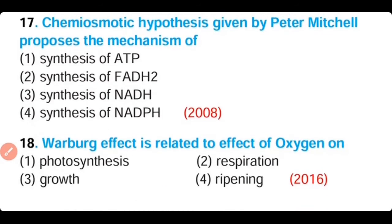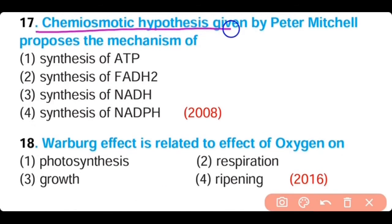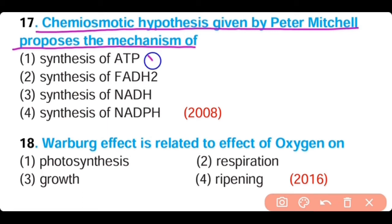Question number 17. The chemiosmotic hypothesis given by Peter Mitchell proposes the mechanism of: synthesis of ATP, synthesis of FADH2, or synthesis of NADH. The correct answer is option 1. Chemiosmosis describes the synthesis of ATP in the chloroplast.